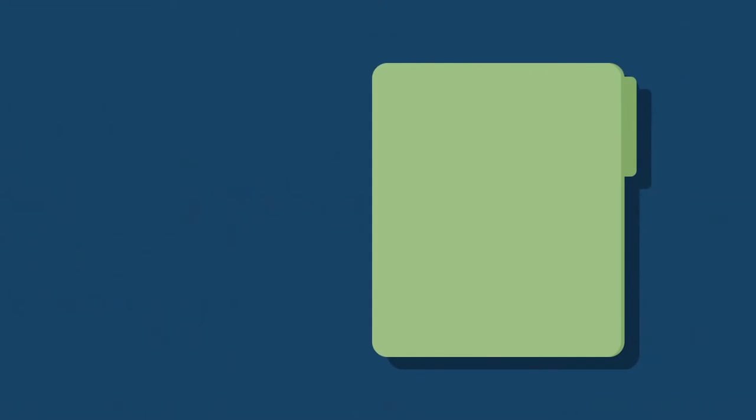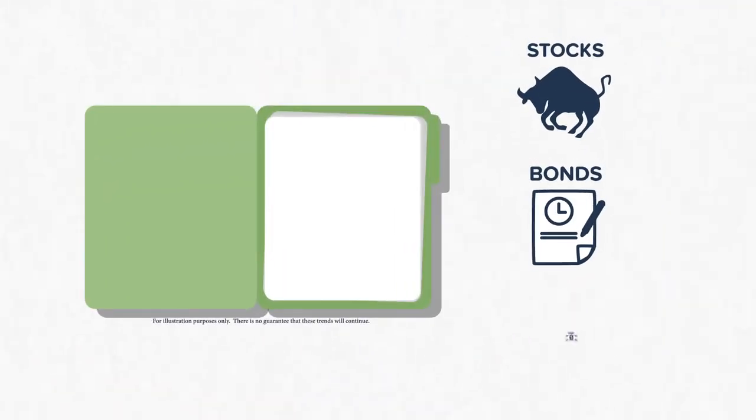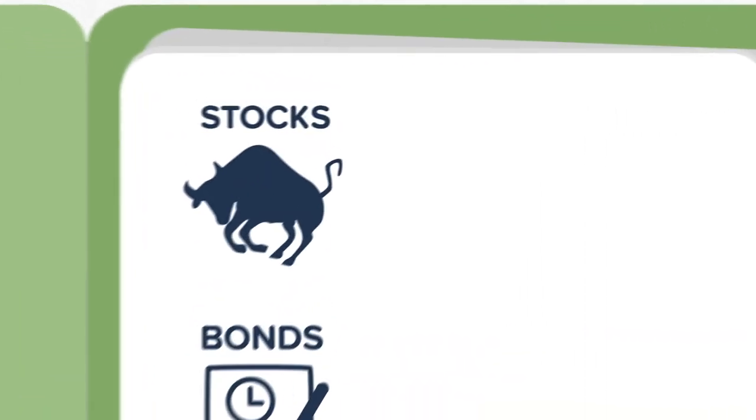So what are people typically investing in today? In general, most people have portfolios that include stocks, bonds, and cash. And while these asset classes often form the backbone of a portfolio, it's important to realize their potential shortcomings.